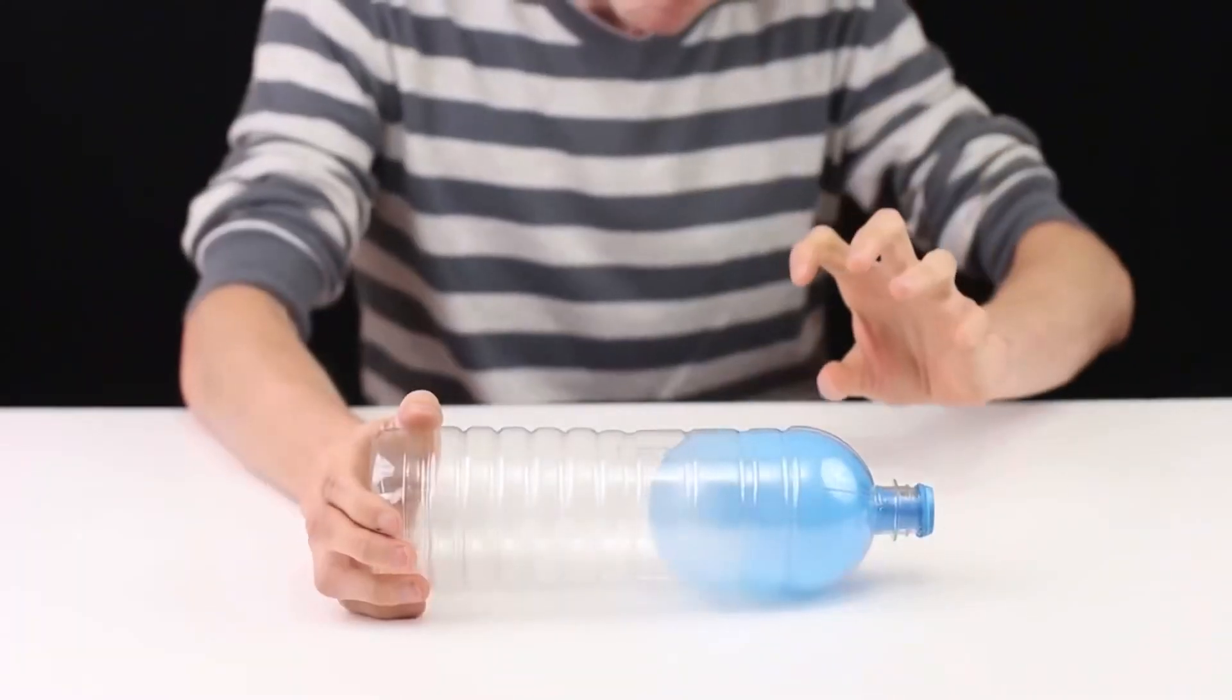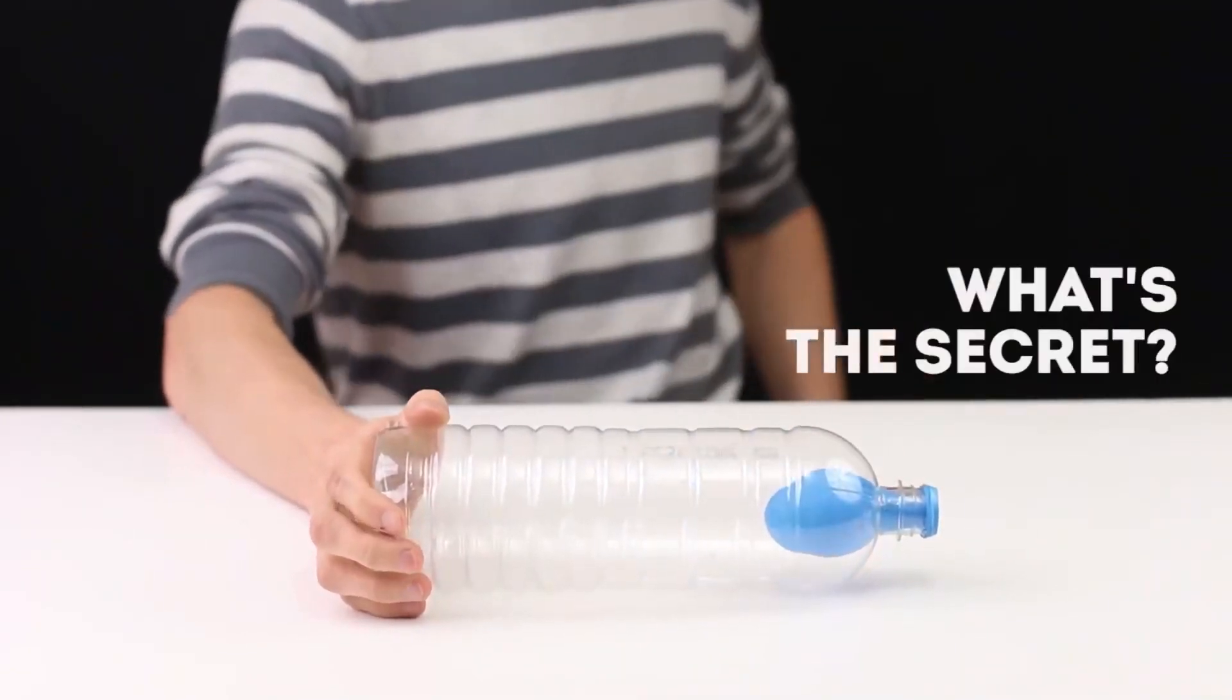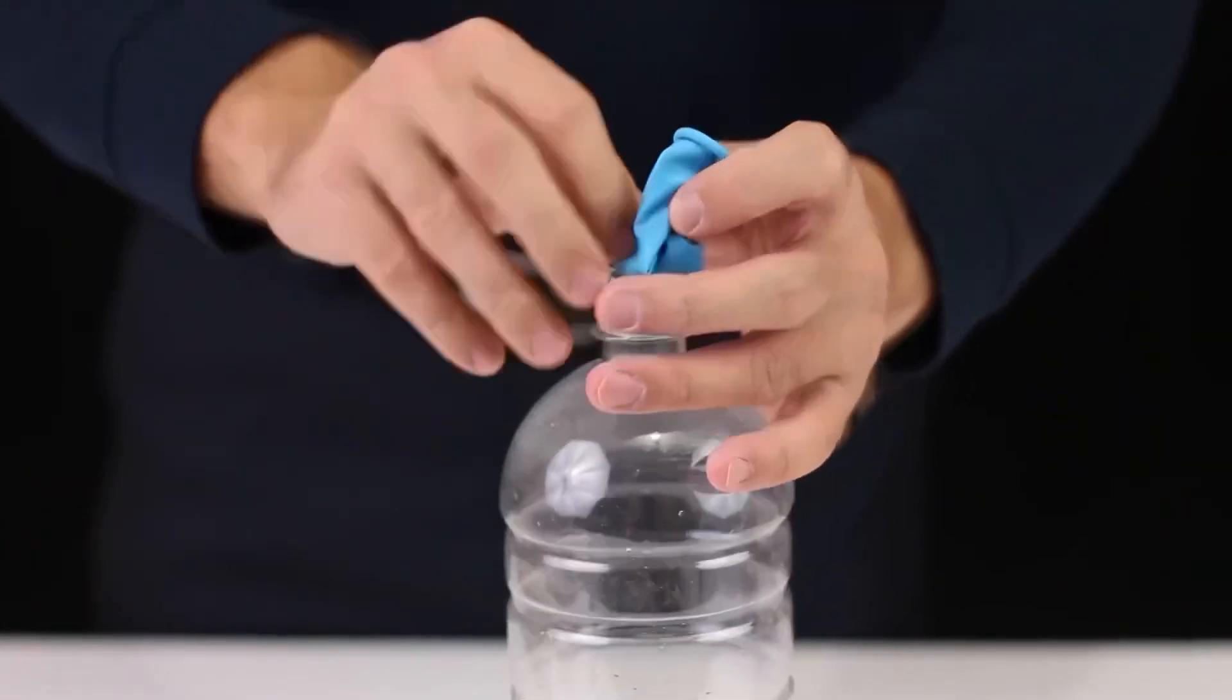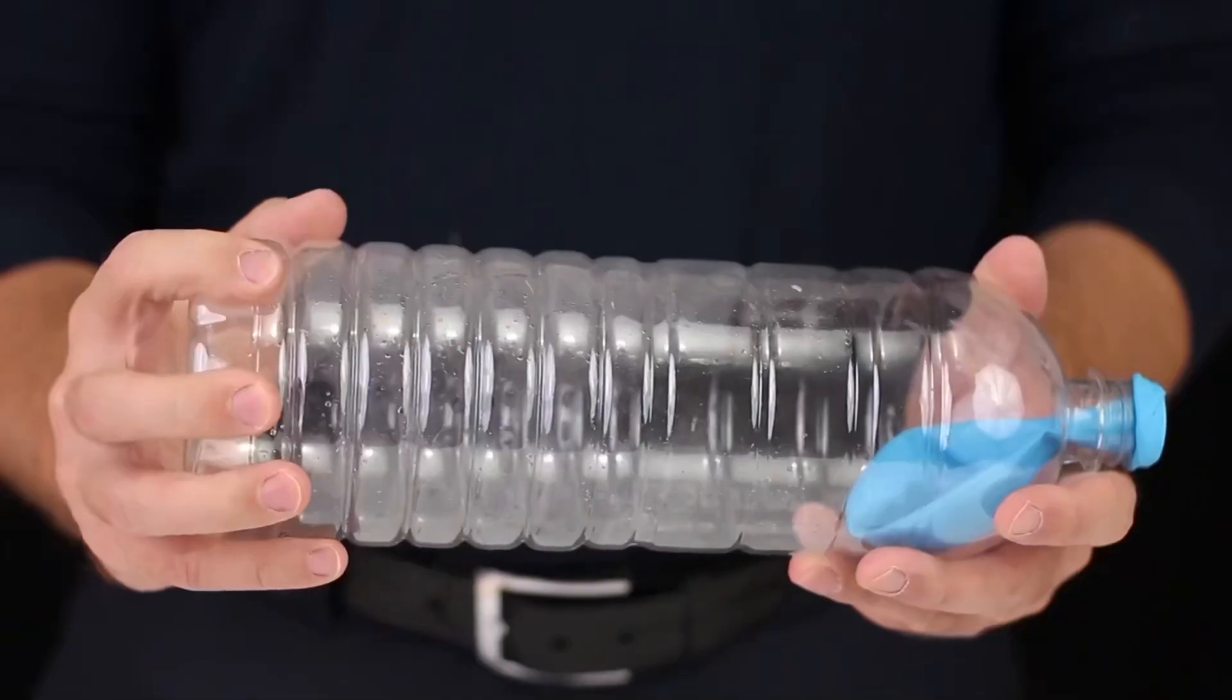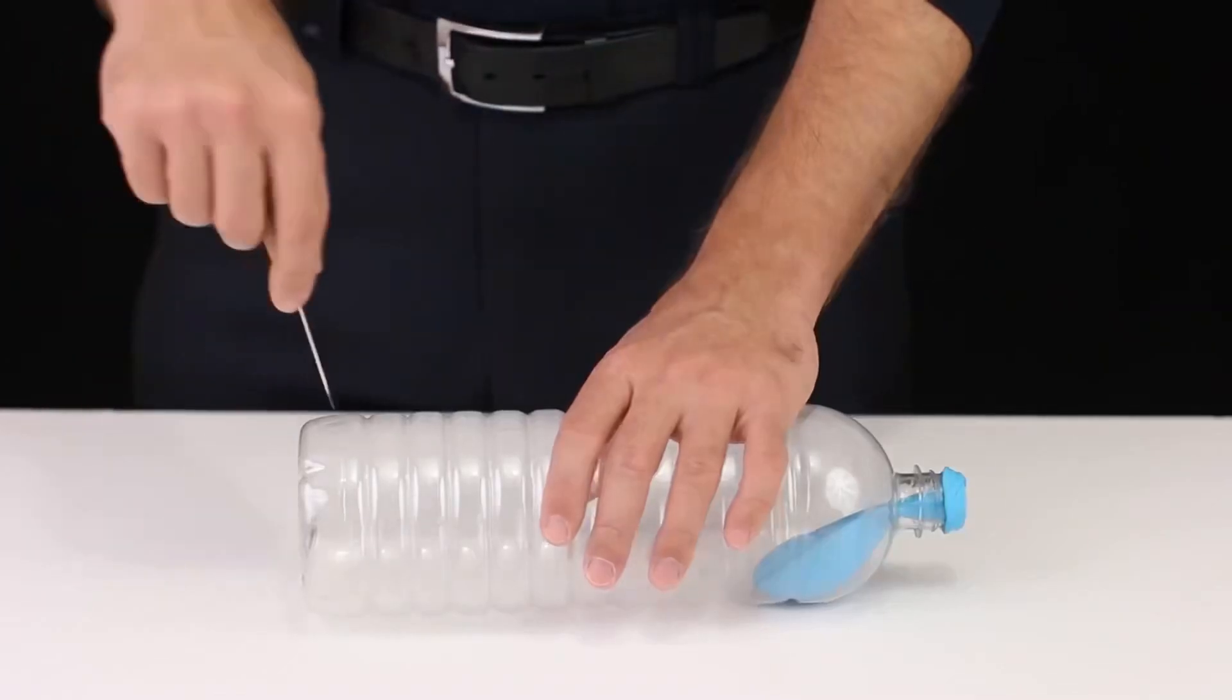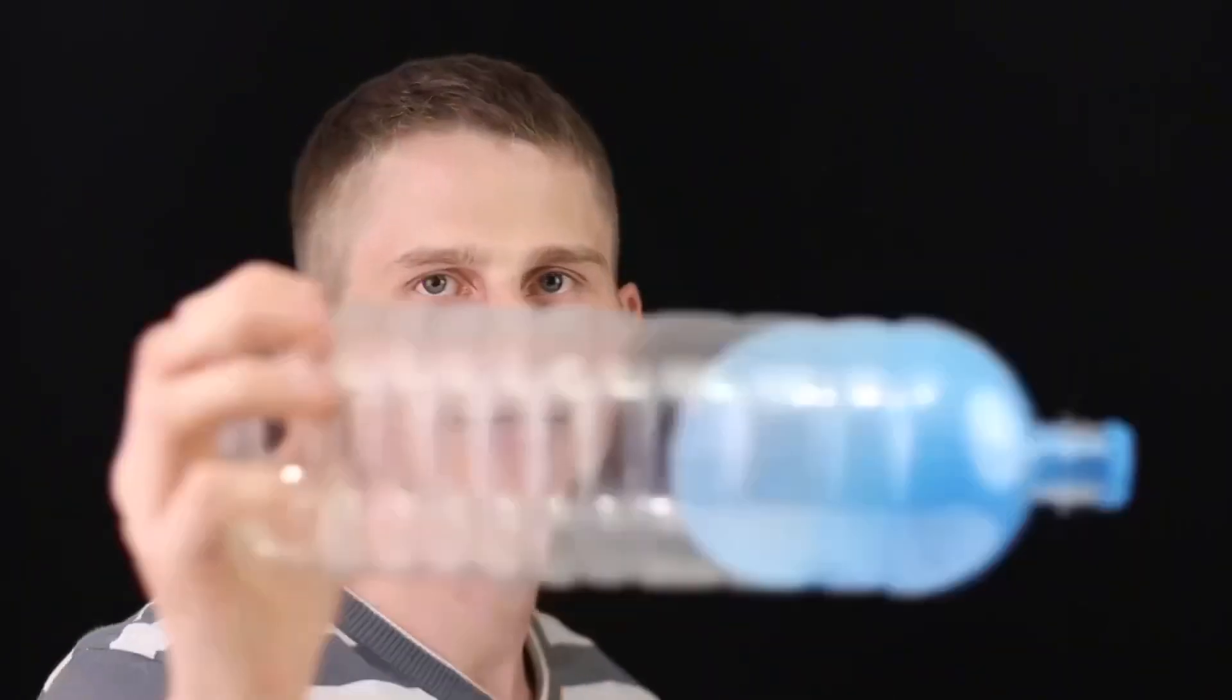The ball inside the bottle deflates on my command as soon as I squeeze my hand and I seem to put pressure on it. You want to know what the secret is? To begin with, put the ball in the bottle and pull it over its neck. Now, let's make a small hole in this place. Inflate the balloon covering the hole with your finger. And once you release the hole, the ball will immediately begin to deflate.